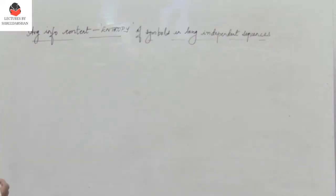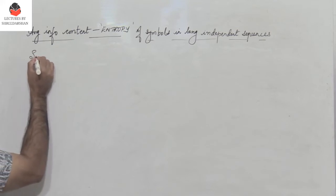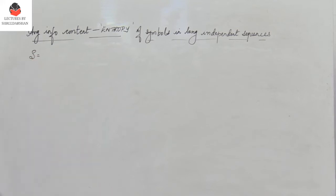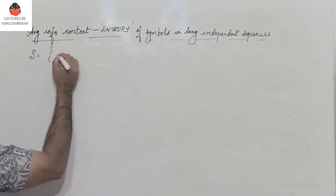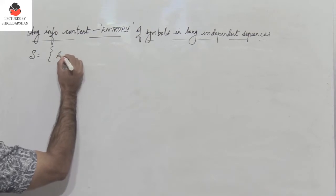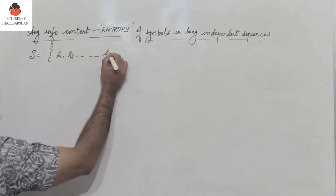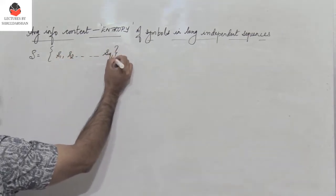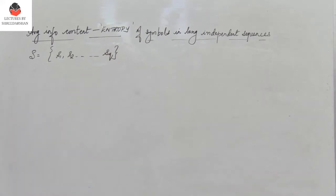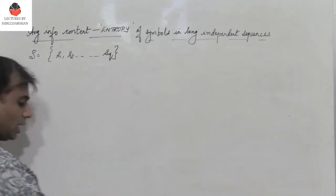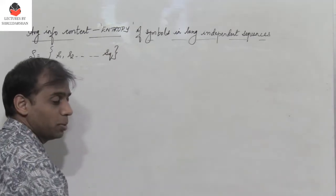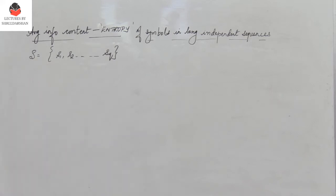Let us consider a source S which emits symbols S1, S2, and so on up to SQ. These symbols S1 to SQ are being emitted with probabilities P1, P2, and so on up to PQ.